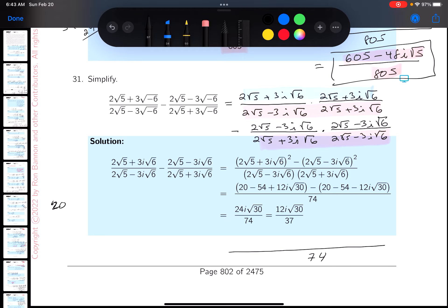It's going to be 4 times 5, which is 20. And then you're going to get 6i root 30. Again, 2 times 3 is 6. You get an i. You get root 30. Then what do I get? I get plus 6i root 30.